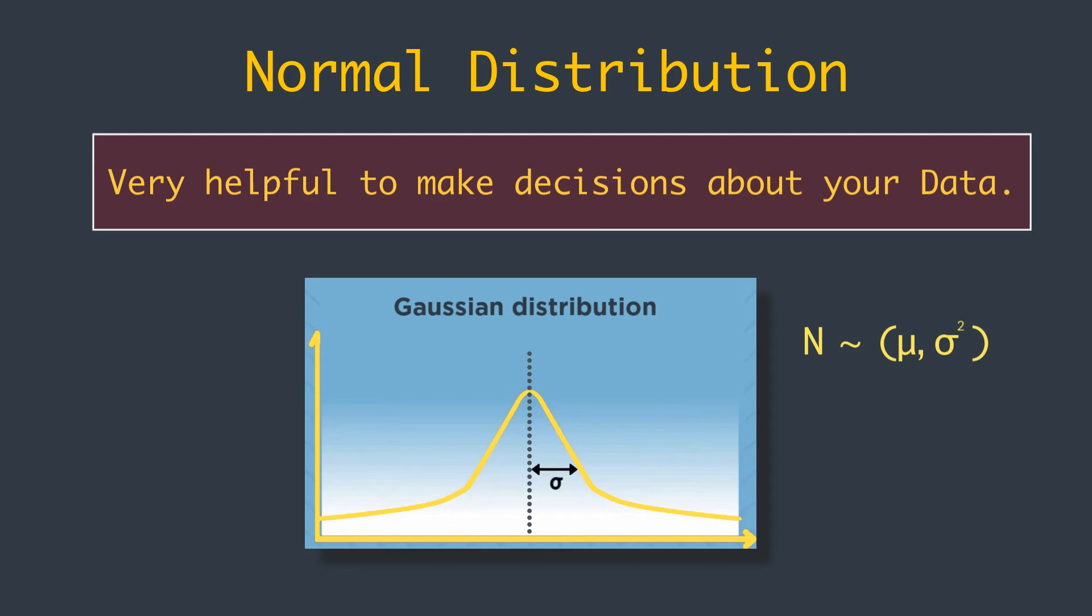Keeping the standard deviation fixed, a lower mean would result in the same shape of the distribution but on the left side of the plane. This is called controlling for the standard deviation, as you can see here.